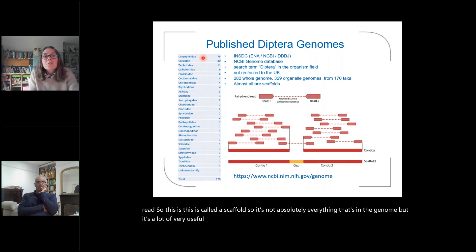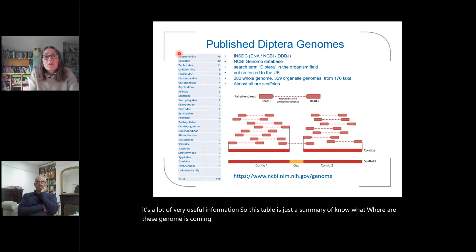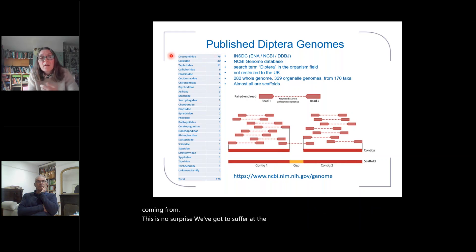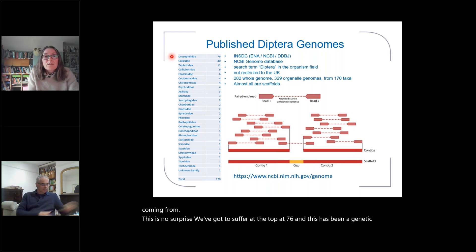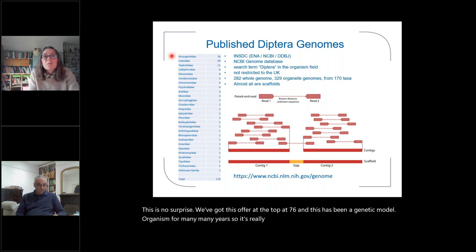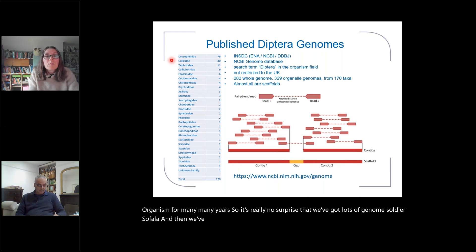This table is just a summary of where these genomes are coming from. This is no surprise — we've got Drosophila at the top with 76. Drosophila has been a genetic model organism for many, many years, so it's really no surprise that we've got lots of genomes for it. Then we've got quite a high number for Culicidae — obviously mosquitoes — and then on down through these other families. So what's out there already doesn't really cover the breadth of Diptera diversity.